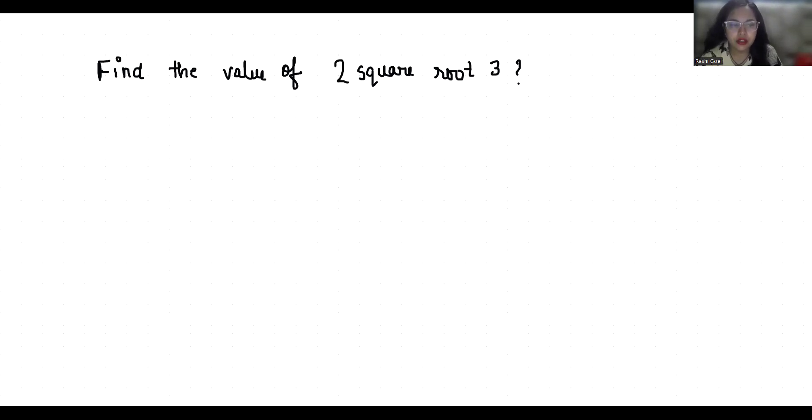Let's simplify this. 2 square root 3. Square root 3 is an irrational number, which means it cannot be expressed as a finite decimal or fraction, so we can approximate its value.